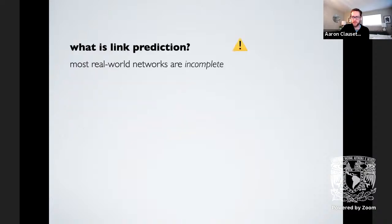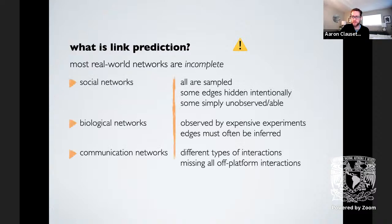One simple observation in network science is that most real-world networks are incomplete. In social networks, these are all sampled — edges are sometimes intentionally hidden. You may not want to friend a certain person on social media even though you know them because you're using that platform in a particular way, and some connections are simply unobservable. In biological networks, many interactions between genes must be measured by expensive experiments, and sometimes edges have to be inferred.